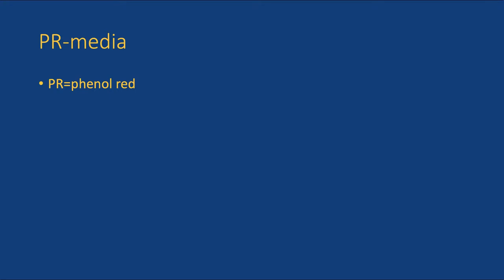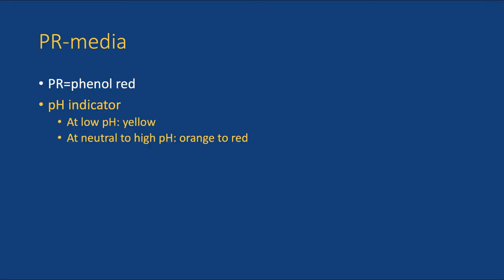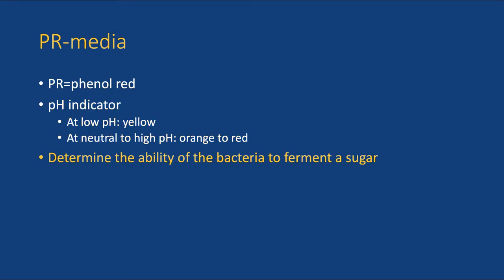The next media you will inoculate belong to a group of phenol red media. Phenol red is yet another pH indicator. It is yellow at low pH and orange-red at neutral to high pH. Phenol red media are used to determine whether the bacteria can ferment particular sugars and produce acid as a result.